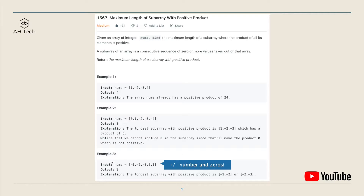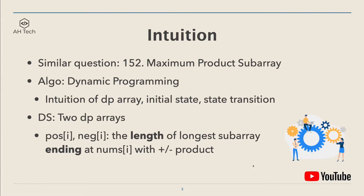The tricky part in this question is that the array can contain positive numbers, negative numbers, or even zeros. There's a very similar question, LeetCode 152, Maximum Product Subarray, but in that question we calculate the maximum product of the subarray. In this question, we find the maximum length of the subarray with a positive product.